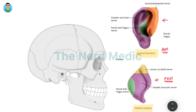As far as the nerve supply is concerned, we will start from the center and go towards the periphery. In the center, in the external auditory canal, we have the facial nerve and vagus nerve supplying it — both from the anterior aspect and from the posterior aspect. This is the area supplied by the facial nerve and vagus nerve.